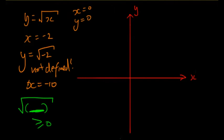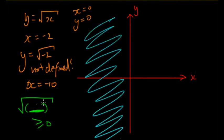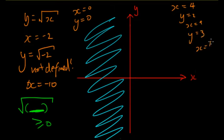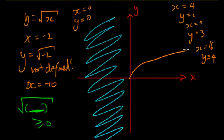With transformations the domain does change, so it's better to think of it as: whatever's in the square root bracket must be positive. At the moment it's only x, so x must be greater than or equal to zero. When x equals zero, y equals zero. When x equals four, y equals two; x equals nine, y equals three; x equals sixteen, y equals four. The graph is always increasing but the gradient decreases.